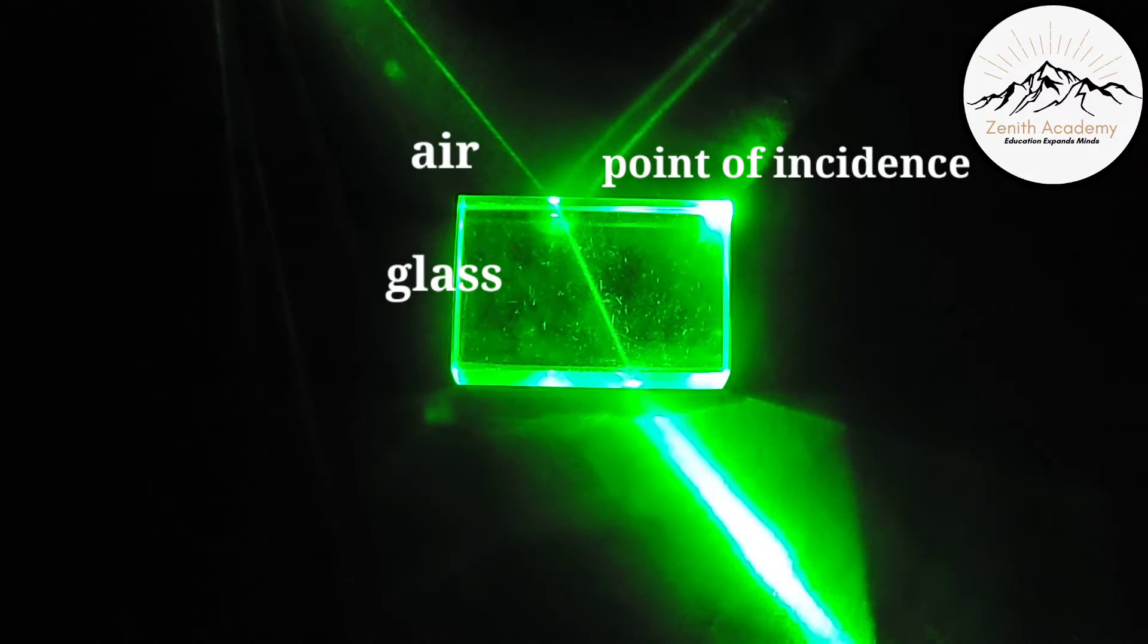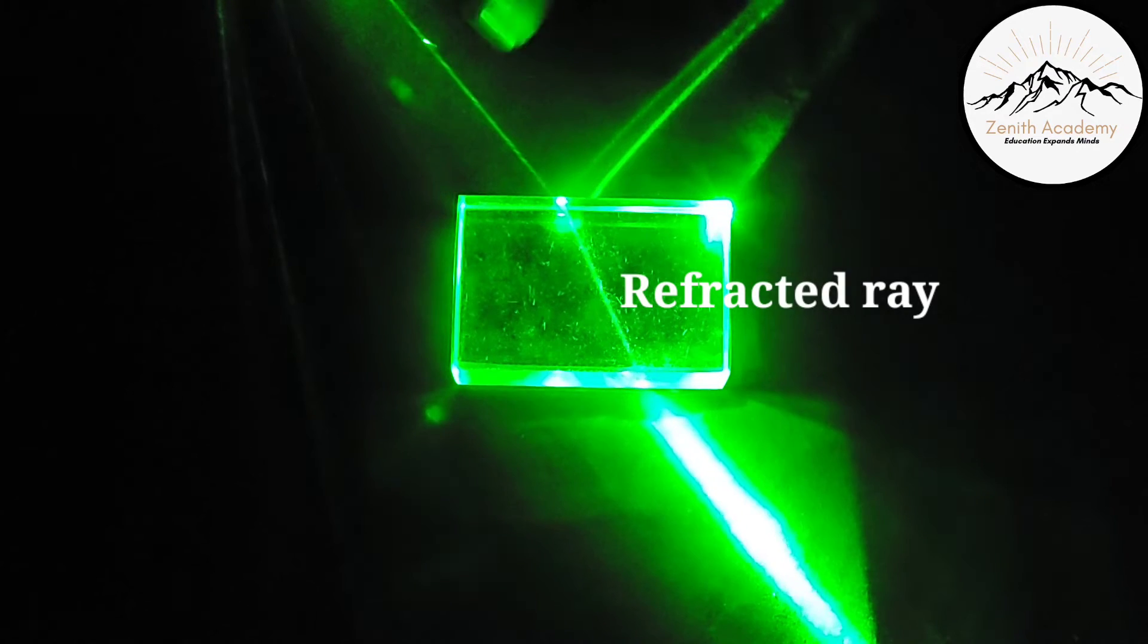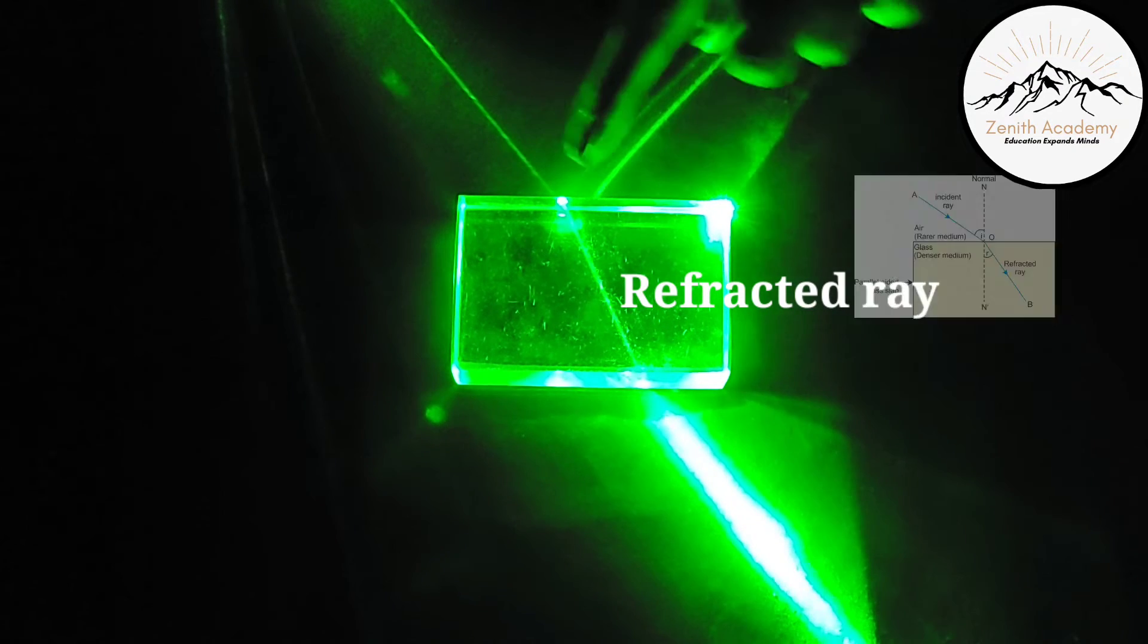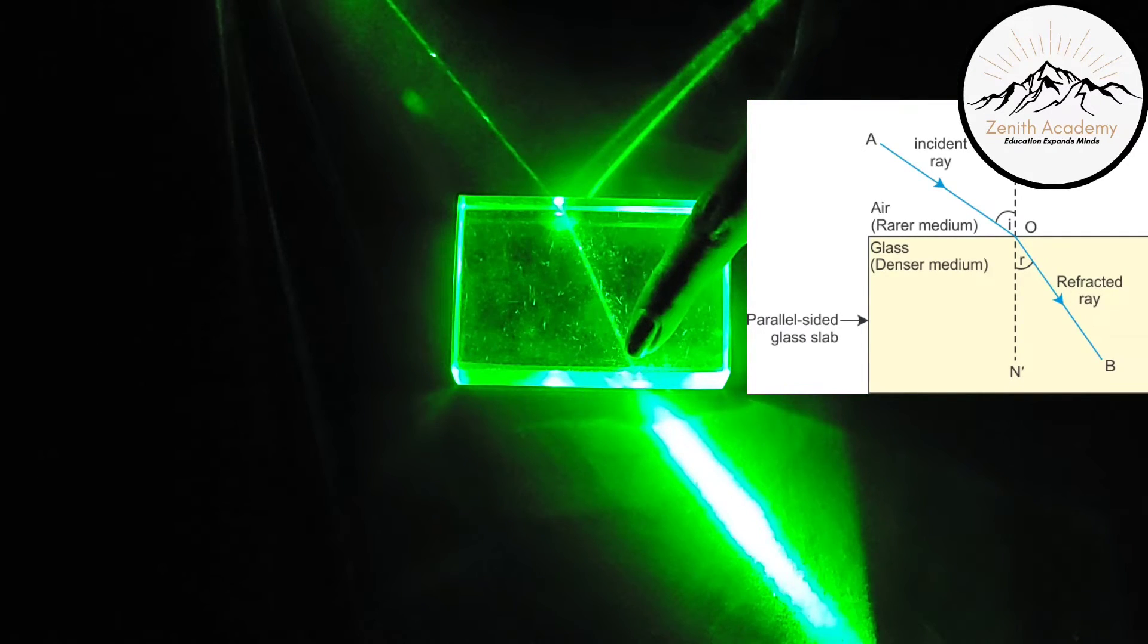Now this is the ray that is refracted, that is bending and moving towards the normal because the light is entering from rare to denser medium, so this is refracted.